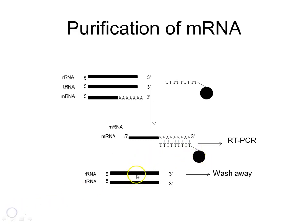Everything else will wash straight through the column, separated away from the bead. We can then release our messenger RNA for the next step — for example, reverse transcription PCR.